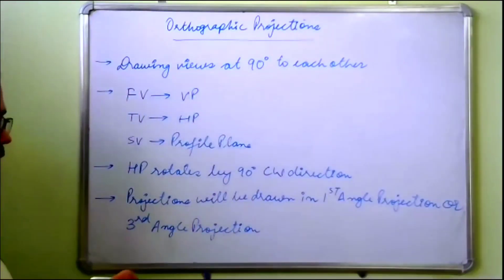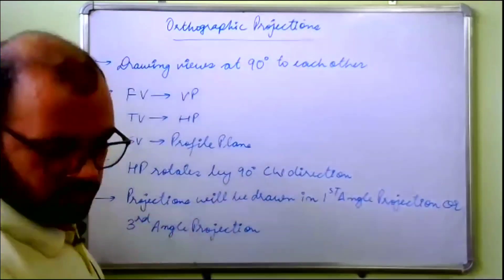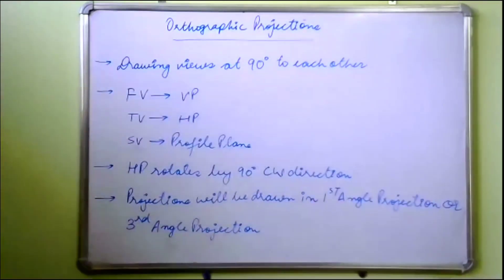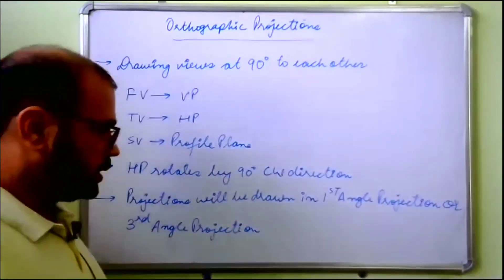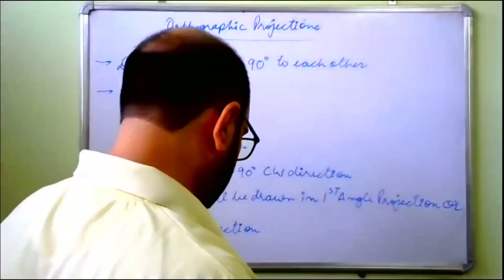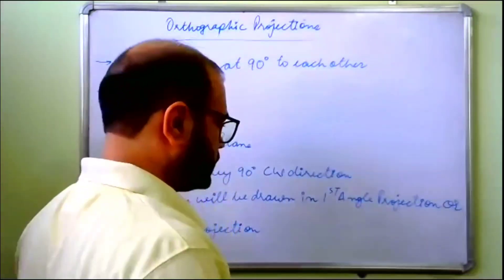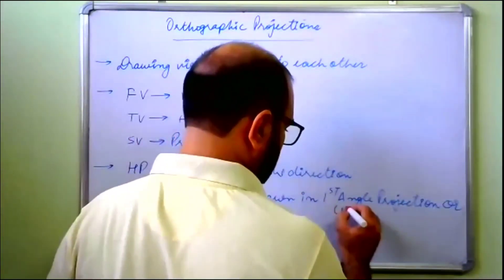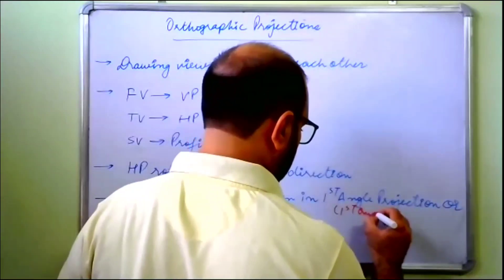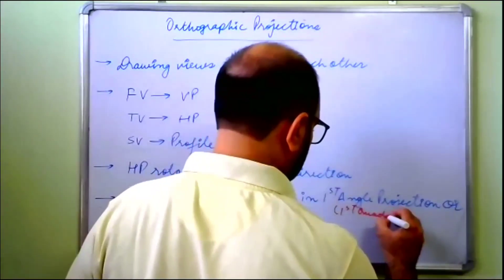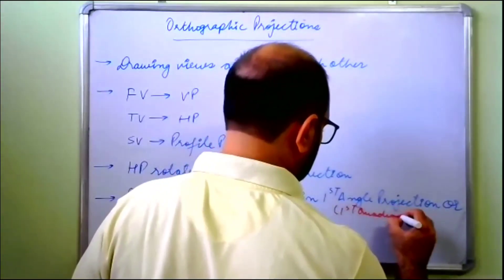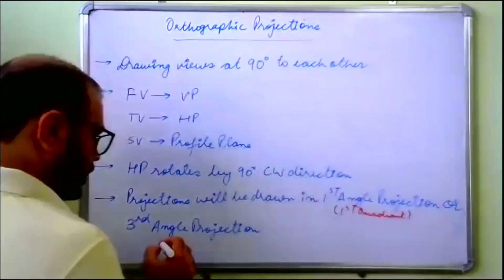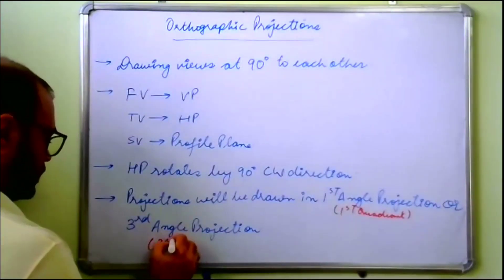It can be drawn in first angle projection or it can be drawn in third angle projection. First angle projection means first quadrant, and third angle projection means third quadrant.